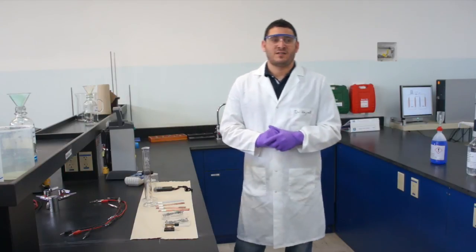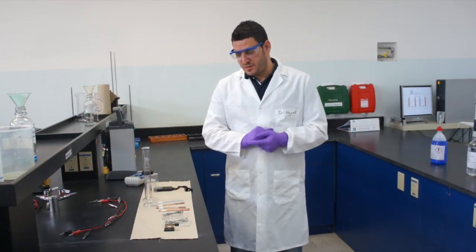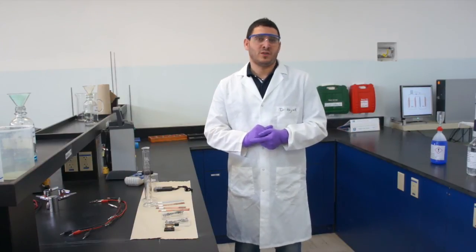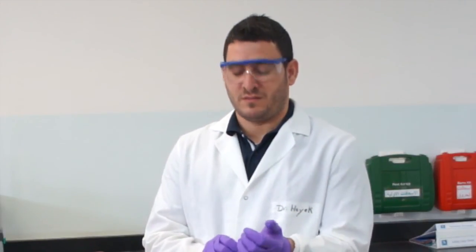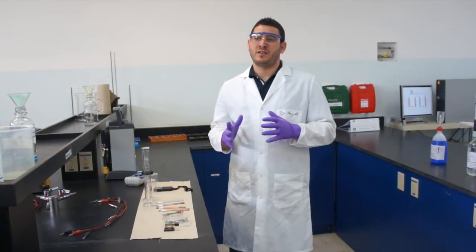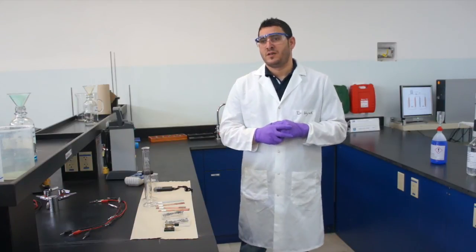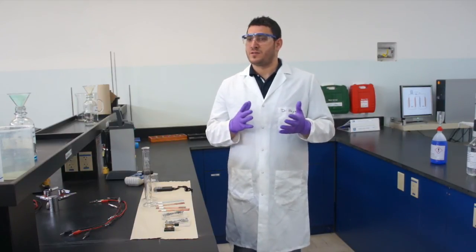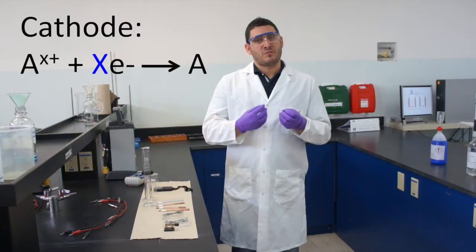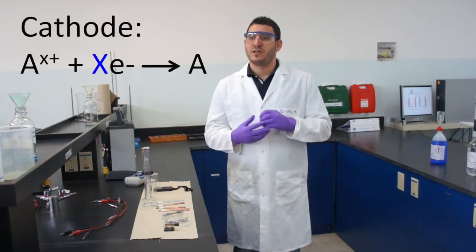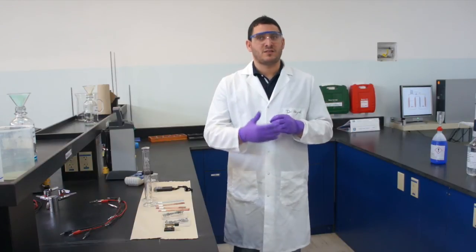This is experiment 18, related to chapter 18 which is about electrochemistry. What we are going to do today is build an electrolytic cell. The main objective is to prove Faraday's law. Michael Faraday in 1832 discovered that the amount of metal that gets deposited on the cathode — since reduction is happening on the cathode — is proportional to the amount of electricity given.